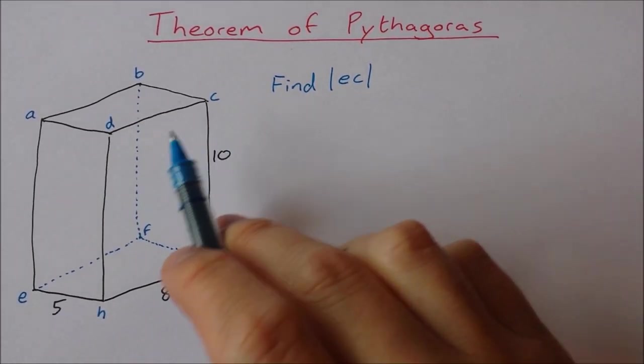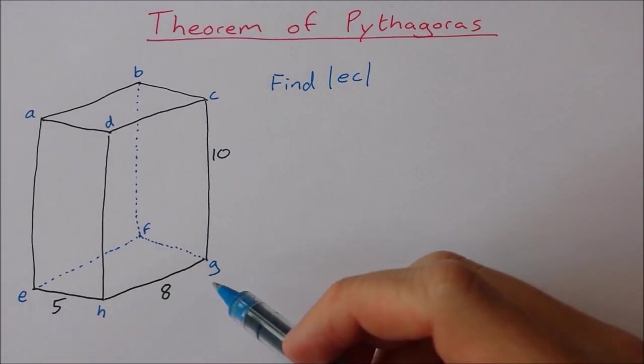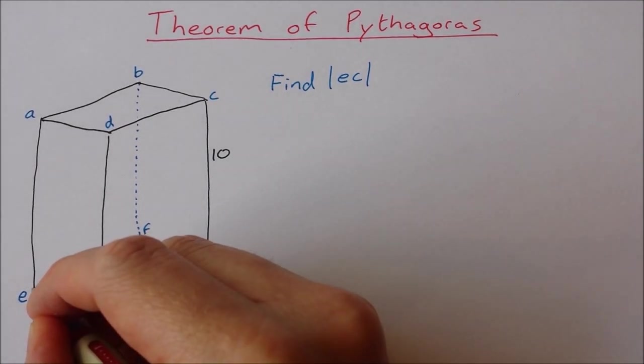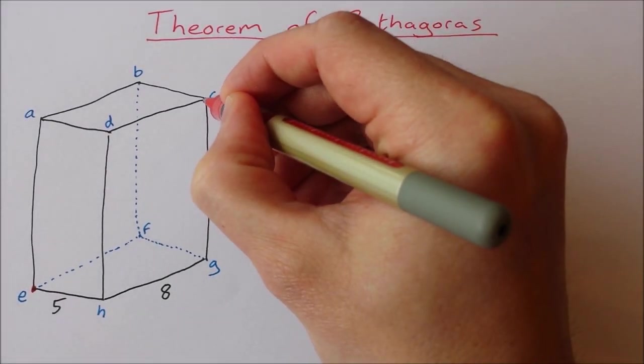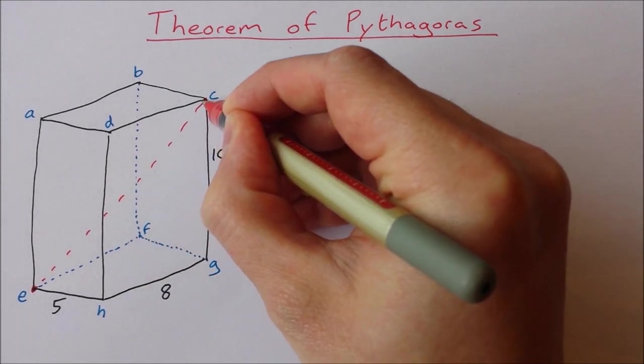Well I have a cuboid with length 8, width 5 and height 10. Now EC is this length here, from E at that back corner to C at that front corner. That length there.